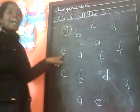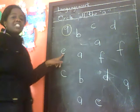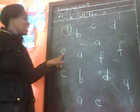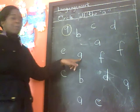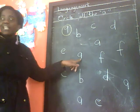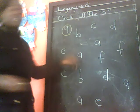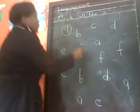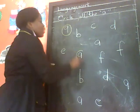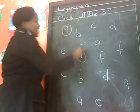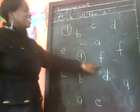Is this sound R? No. This is sound A. How about this one? This one is sound R. We are going to circle it, like this.